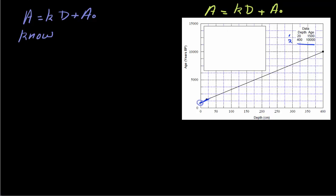So our knowns consist of two points. We have a D1 and an A1, and we have another point, a D2 and an A2. What are our unknowns in this case? The slope and what we're supposed to find in this case is the intercept.